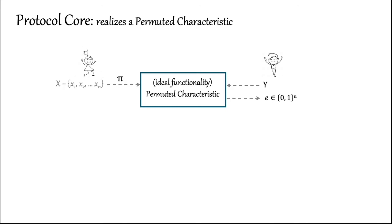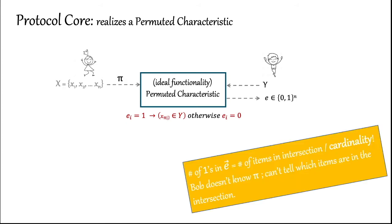Let's start with the protocol core or PC, which realises a functionality we call the permuted characteristic. Here Alice has her set X. Her input to the functionality is the permutation pi that she chooses. Bob sends his input Y to the function and learns a bit vector E such that EI is 1 if Alice's permuted item in that position I belongs to his set, otherwise EI is 0. Bob doesn't know Alice's input set X or pi, so the contents of the intersection are hidden from him. However, the number of 1s in vector E reveal the number of matches with items in his set, which is essentially the cardinality function.